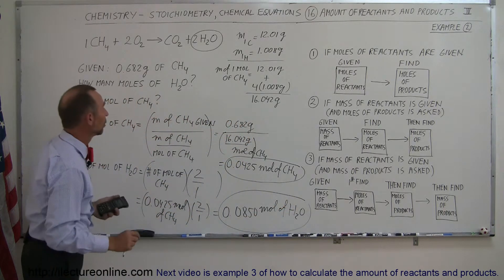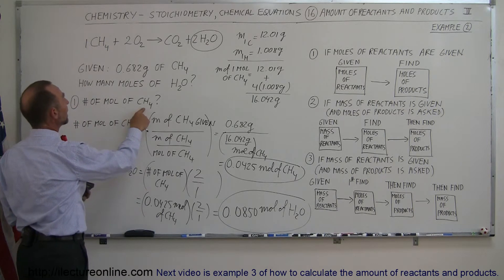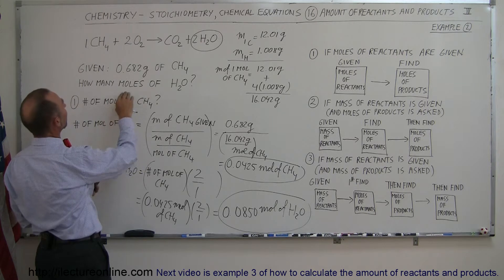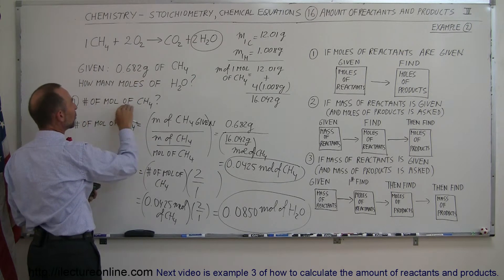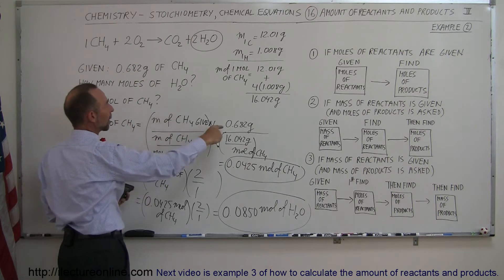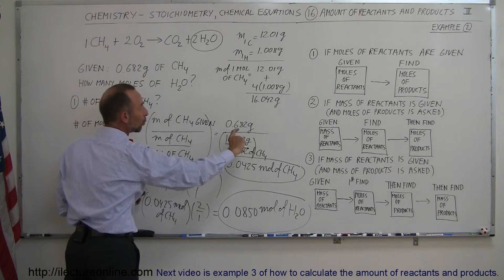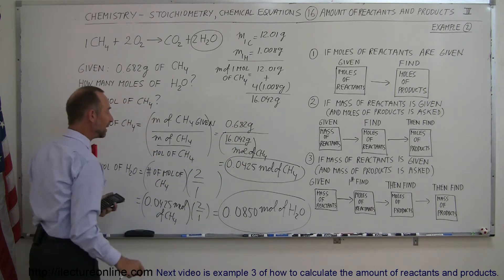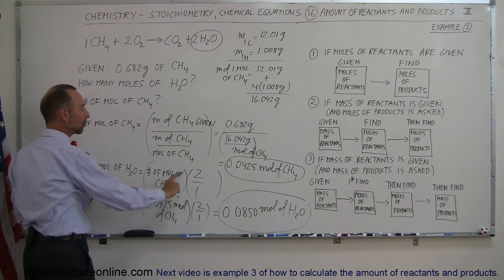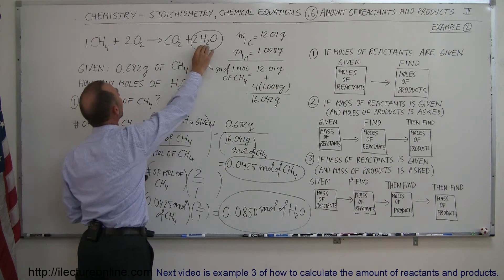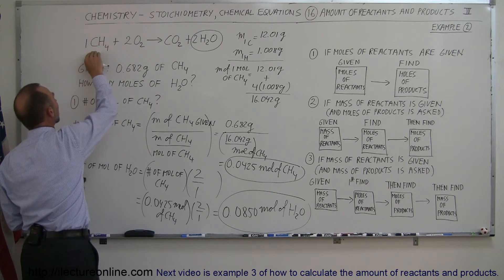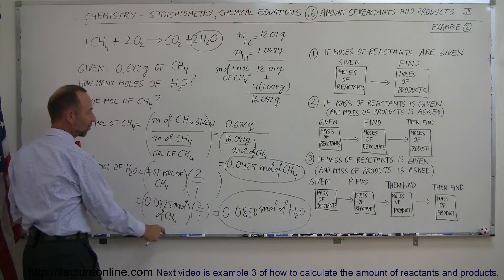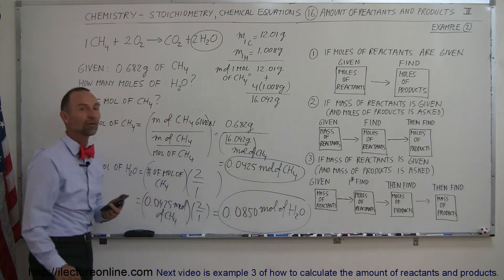To recap: we start with the number of grams of methane and convert to moles of methane by dividing the grams by the mass per mole ratio. That gives the number of moles of methane. Then we multiply by the ratio of how many moles of product we get per mole of reactant — the 2-to-1 ratio — to get the total number of moles of water. And that's how you do that.